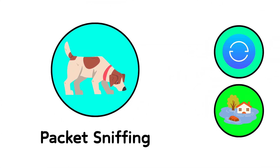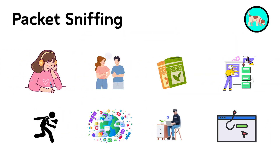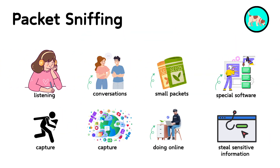8. Packet Sniffing. Packet sniffing is like secretly listening to other people's conversations. On the internet, data travels in small packets. Using special software, a hacker can capture these packets as they travel through a network. This allows them to see what others are doing online, and possibly steal sensitive information.